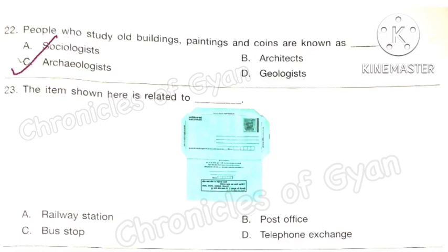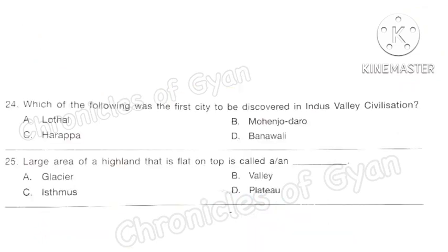Question 23: The item shown here is related to which place? This is an inland letter and it can be found at option B: Post Office. Question 24: Which of the following was the first city to be discovered in Indus Valley Civilization? The correct answer is option C: Harappa, discovered in 1921. After that, Mohenjo-daro was discovered in 1922.